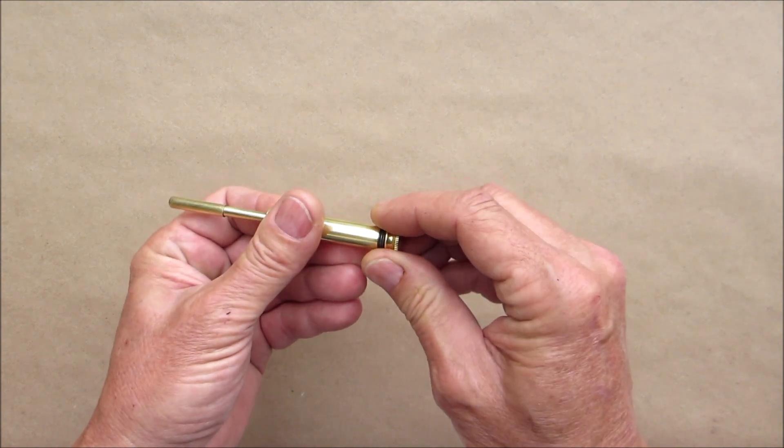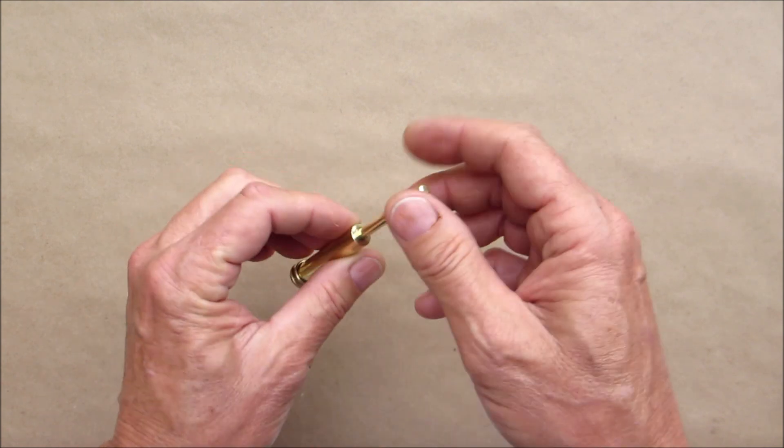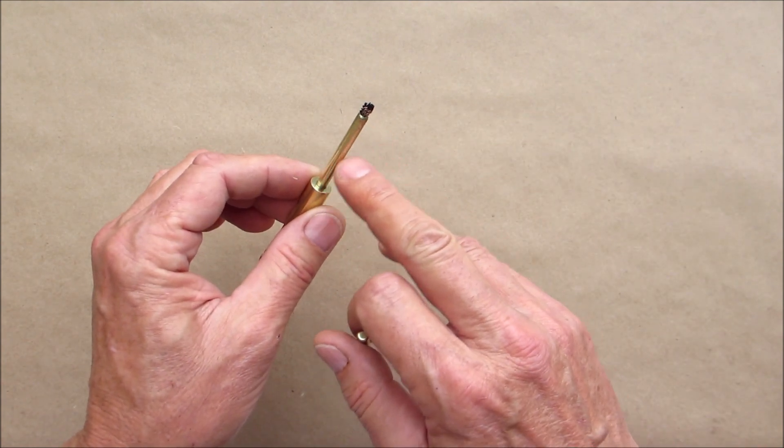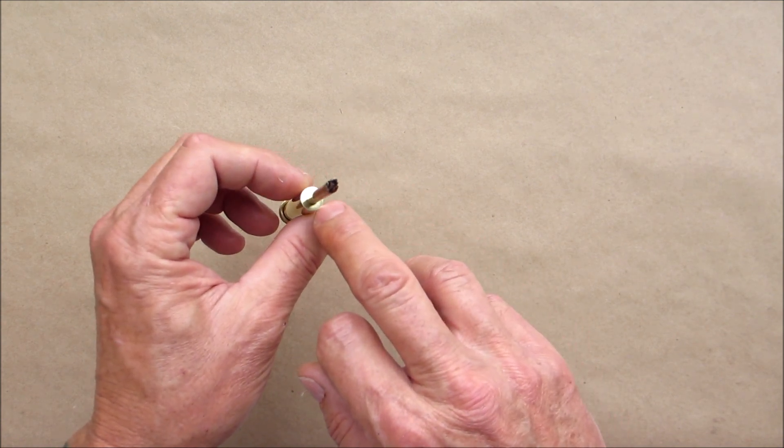This is just the same as the flint tubes except it's not threaded. This is just a brass nut that I did on the belt sander.